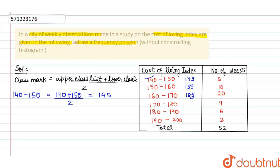The other class marks are 155, 165, 175, 185, and 195. These are all the class marks. Now we have to plot the frequency polygon graph.